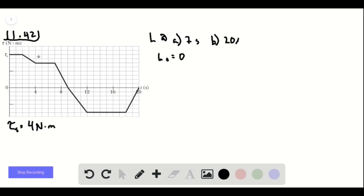This is a graph of the torque that acts on it from time 0 to 20 seconds. The scale of this is set by up here as 4 newton meters. And what we want to do is use the fact that angular momentum is the time integral of torque to find its angular momentum at 7 and 20 seconds.